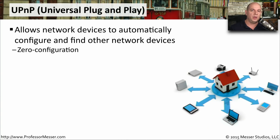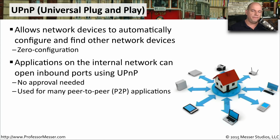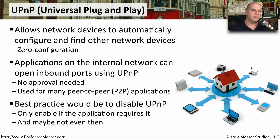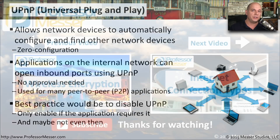The idea behind universal plug and play is that devices can find each other even through the network address translation that normally occurs on our wireless networks. You might also hear this referred to as zero configuration. When UPnP is configured, applications running on the inside of your network can change the configuration of your router to allow certain traffic to pass through your firewall — no configuration changes or approvals needed on your part. However, if it sounds like this might be a security issue, you'd be correct. Having a third-party application make configuration changes to your firewall to allow traffic from the outside to traverse that firewall and reach the inside of your network is certainly of concern. So you may want to consider disabling universal plug and play and instead manually configure these settings for the applications running on your network.